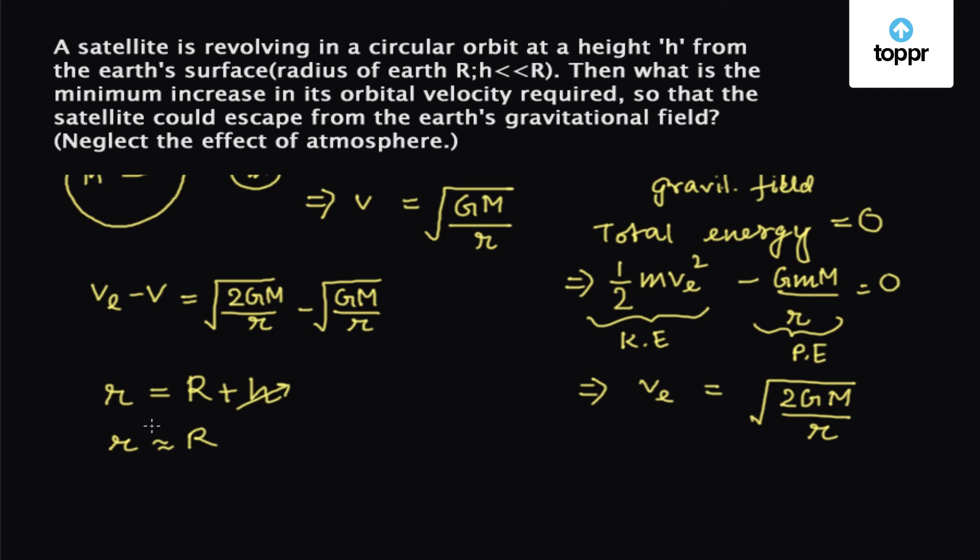So we substitute the value of r in this equation such that we get ve minus v equals root over 2GM upon R minus root over GM upon R, which equals root over GM upon R times (√2 minus 1).